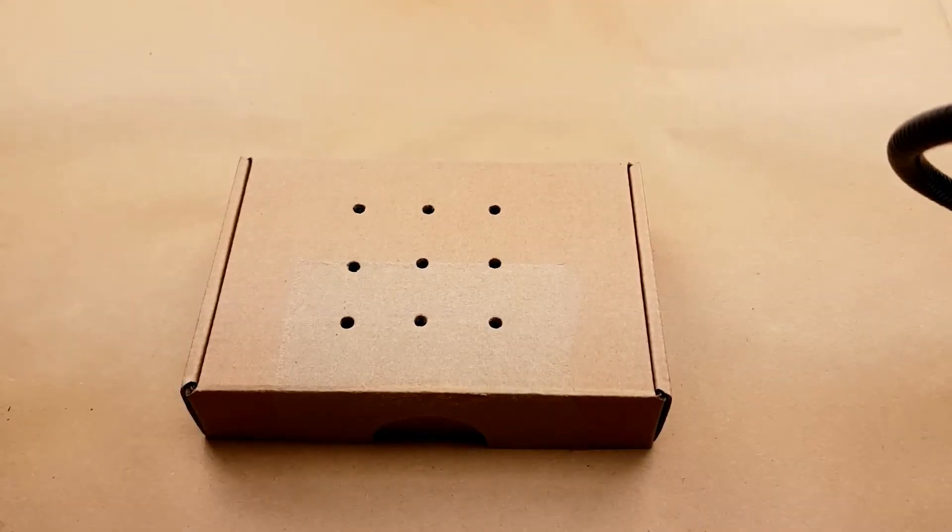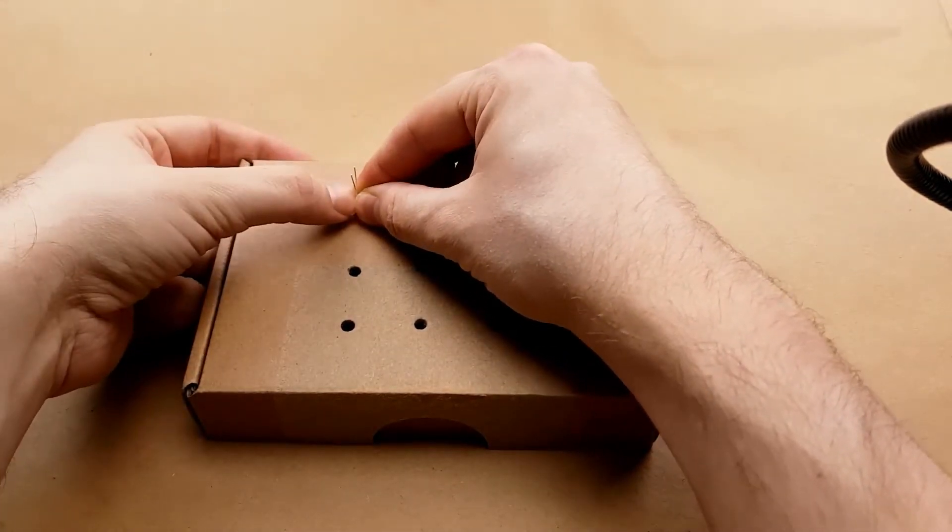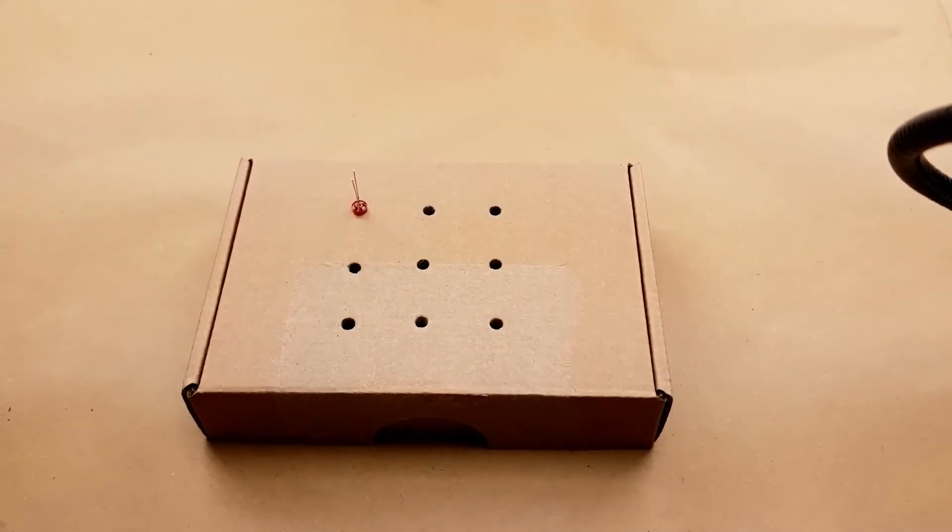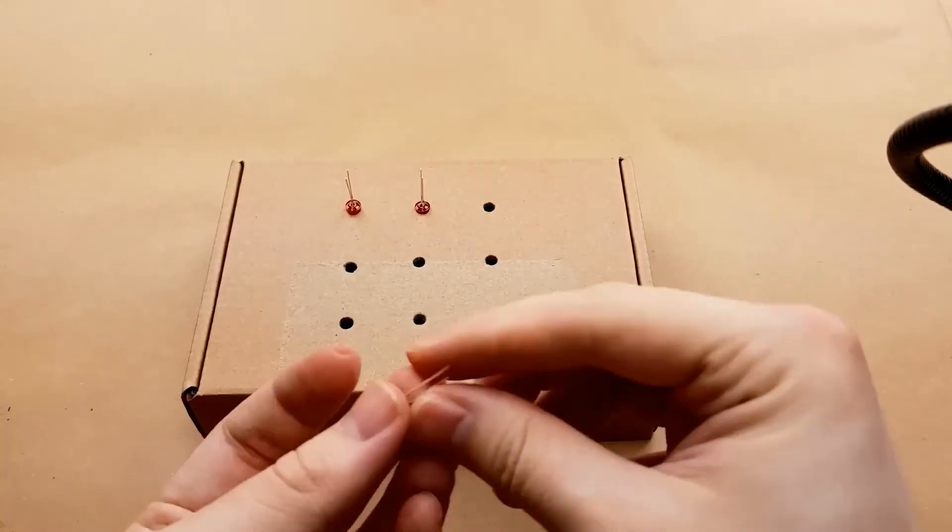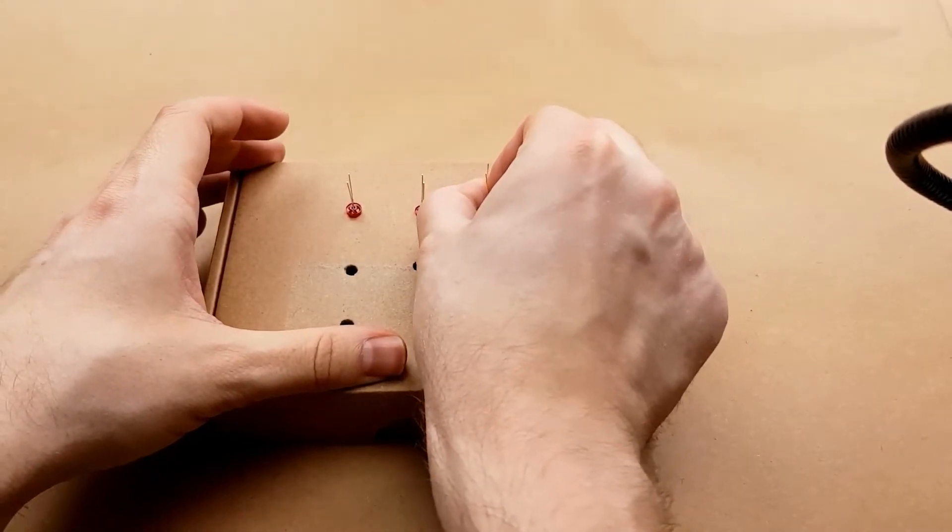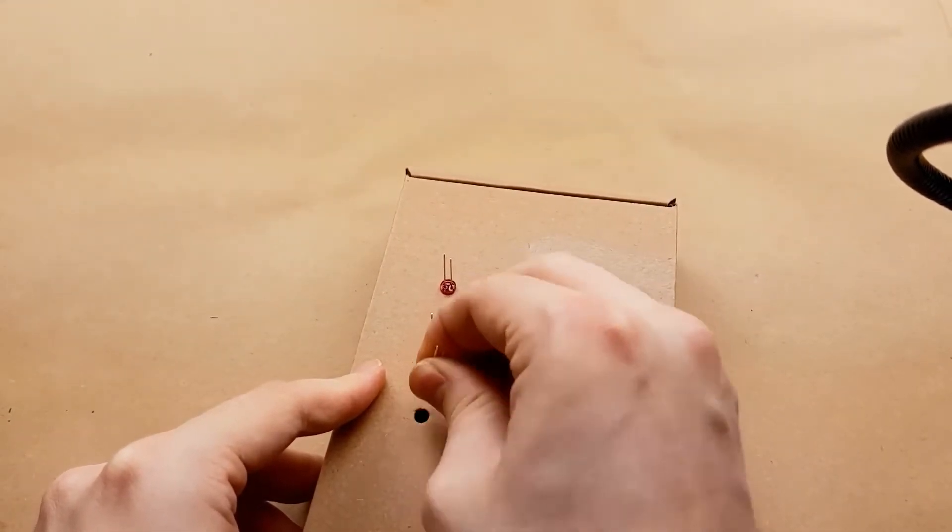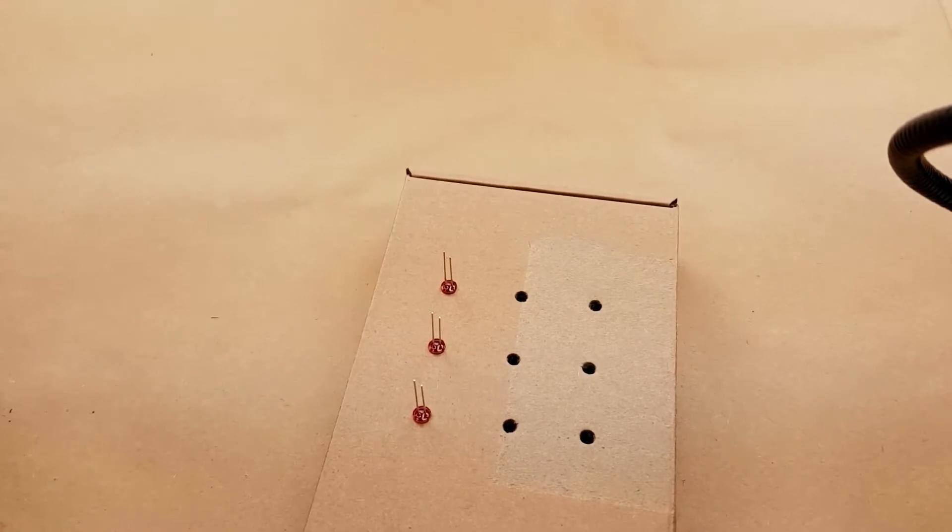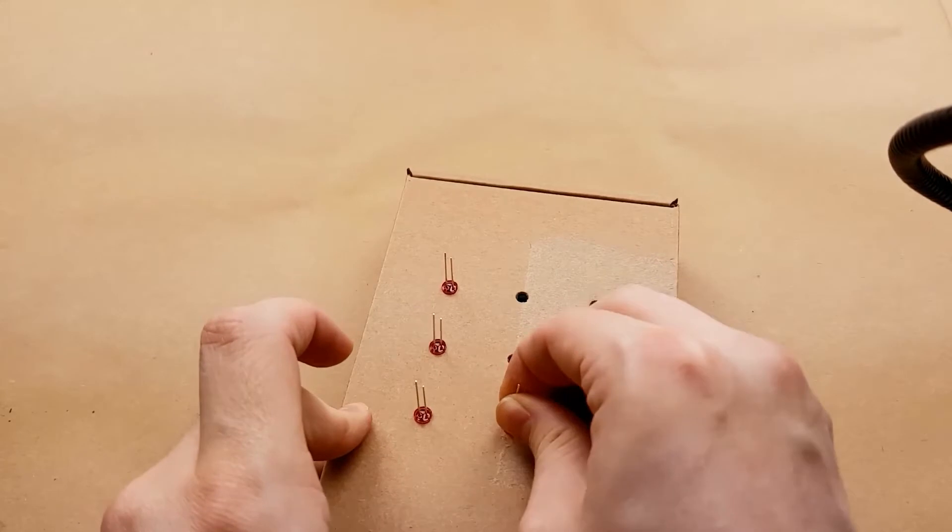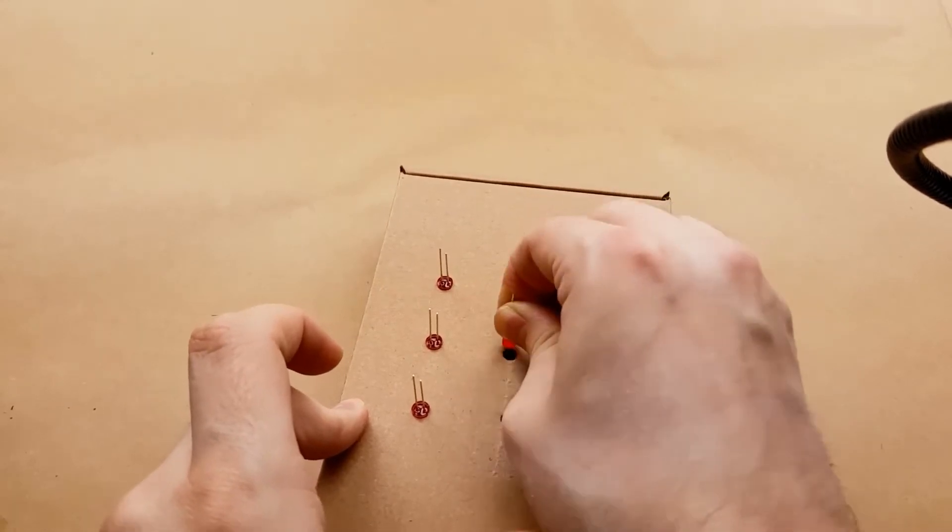Okay, so next up we are going to insert the LEDs. Now we want the negative leads to be bent over and connected, so however you want to do that is fine. And we want the positive leads to stay straight upright. And if you only just poke those holes like I did, then make sure you insert the LEDs a couple of times just to loosen up the cardboard. Because once you have nine of these LEDs stuck in there, if they're stuck in the cardboard, it's going to be annoying to try and get them out.